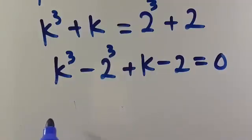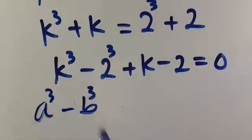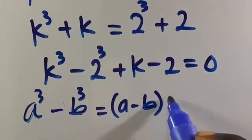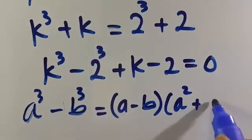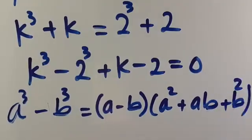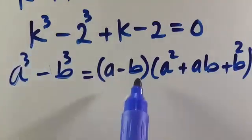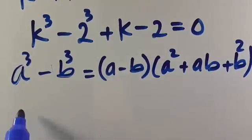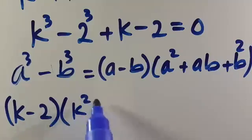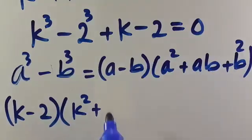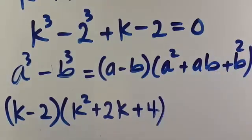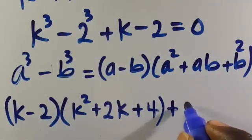Now recall that a³ minus b³ equals (a minus b)(a² plus ab plus b²). Applying this here, with a equal to k and b equal to 2, we get (k minus 2) multiplied by (k² plus 2k plus 4), then plus (k minus 2) equals 0.